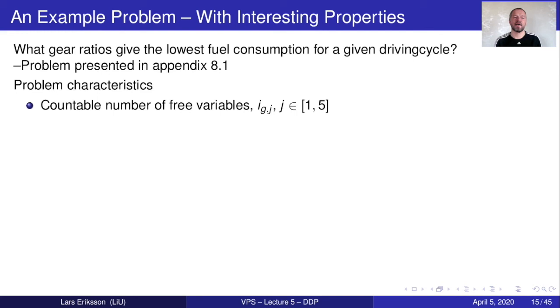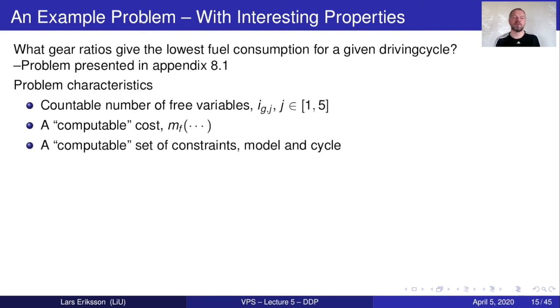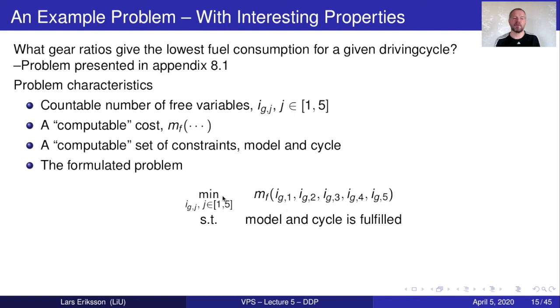The problem characteristics is that we have a countable number of free variables. That's the same thing for all the problem types we have discussed previously today. We always have countable number of free variables. They can be few like this. We can have five decision variables, but you can also have very many like thousands or millions of decision variables and still solve the problem. But still, they are countable. This will differ a little bit when we come to optimal control. So I point this out and spend a little bit of time here to prepare you for the change to optimal control. We have a computable cost. So for example, we can compute the fuel consumption. That's the cost for the problem. We also have a computable set of constraints. For example, the simulation model of the vehicle is a constraint. We need to be able to follow the cycle and what the constraint is doing. We formulate the problem so that we have our countable free variables. We have our cost function. And then we have the constraint. The model and the cycle should be fulfilled. When the problem is formulated, we select and apply a solver to get the solution to it.